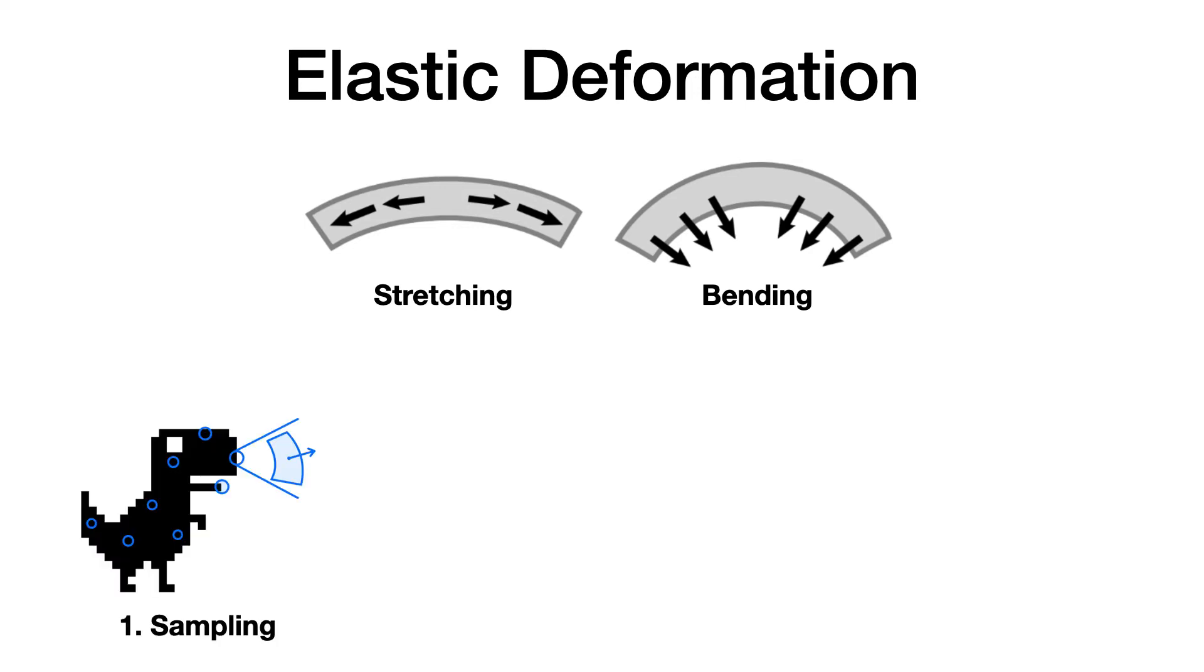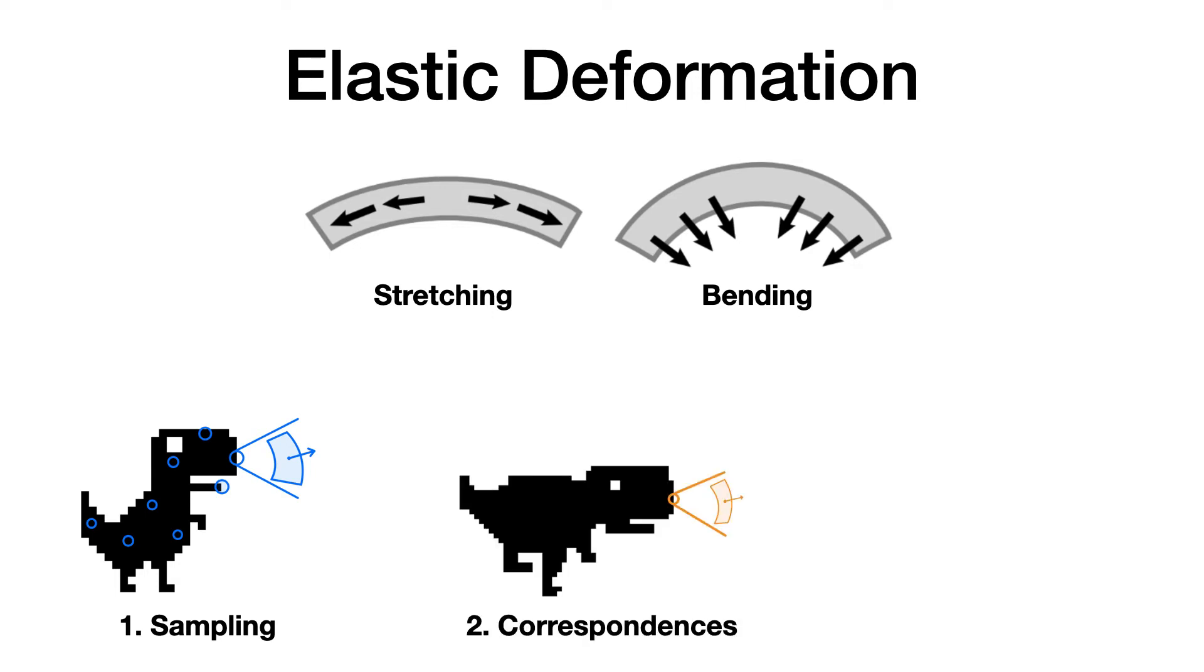First, we will sample points from the zero isosurface of the input neural field. We will then find the corresponding points in the deformed neural field. Finally, we will compare these two infinitesimal patches to compute the amount of stretching and bending that happened between them.